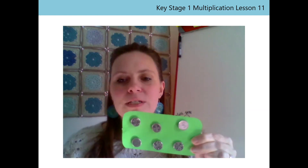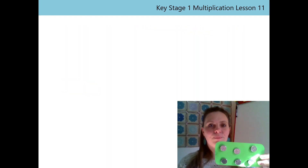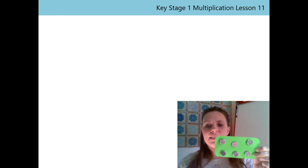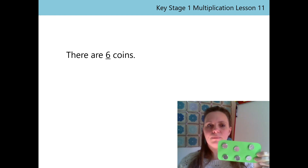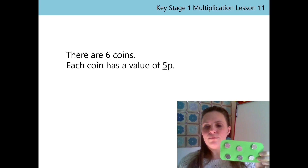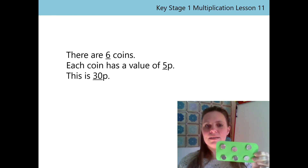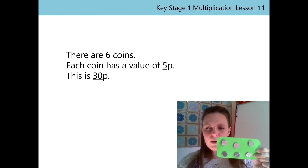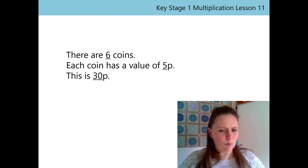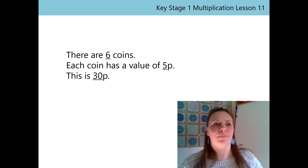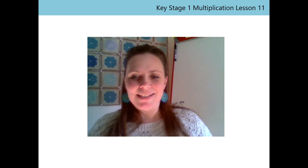Let's put all this information together into our stem sentences. This is 30p. Let's use our stem sentences together to work out how we arrived at knowing this set is 30p. There are 6 coins. Each coin has a value of 5p. This is 30p. So now we know that Purse A has a value of 30p. We can put that one down, but remember its value — 30p.